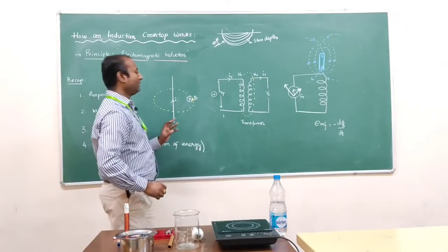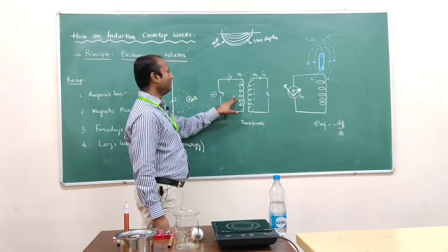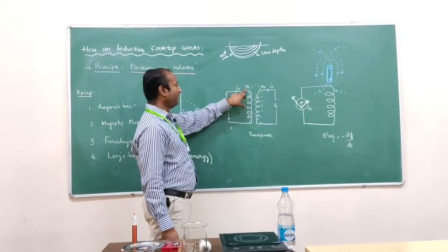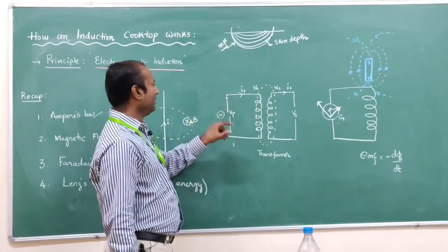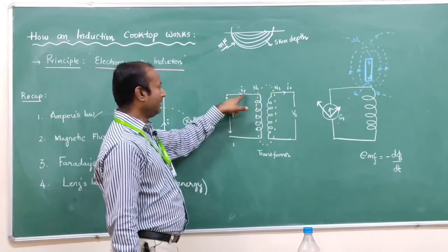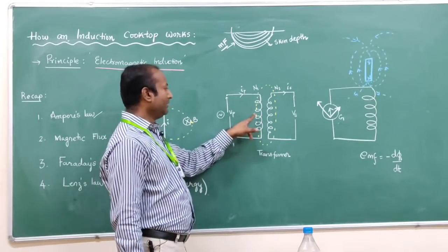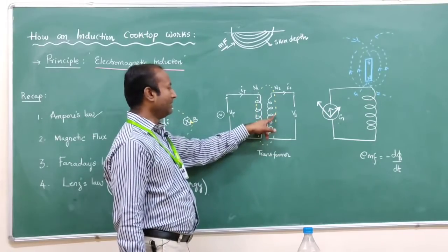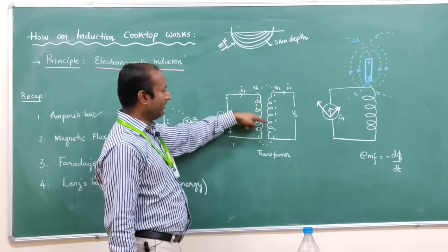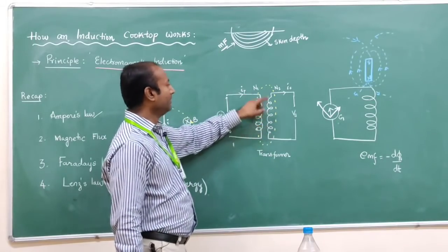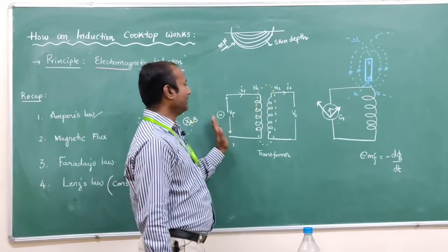Now let us look at the transformer. In the transformer, I have taken two coils. N1 is the number of turns in the primary coil, N2 is the number of turns in the secondary coil. I am connecting to the alternating current source. Whenever there is alternating current flowing through a coil, there is an association of magnetic field. This magnetic field is linked with respect to this particular number of turns of the coil. Once there is a change of magnetic flux in this coil, it produces an induced EMF, which causes an induced current. This is the working principle of a transformer.